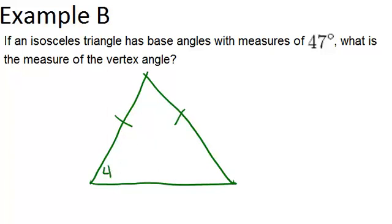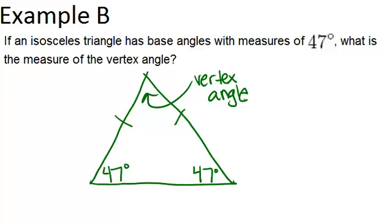If those are each 47 degrees, we can figure out the vertex angle, which is up here, by remembering that the three angles in any triangle have to add up to 180 degrees. So the vertex angle is going to be 180 minus 2 times 47, because that's the rest of the triangle. And you get 86 degrees. So the vertex angle of this triangle must be 86 degrees.